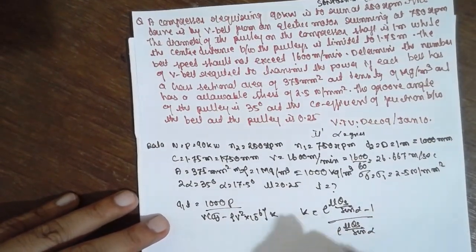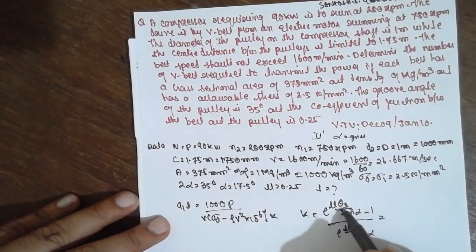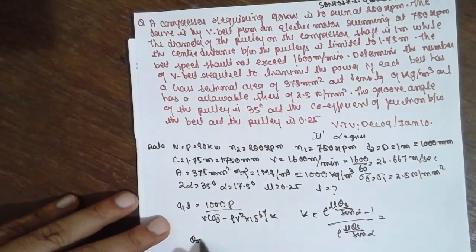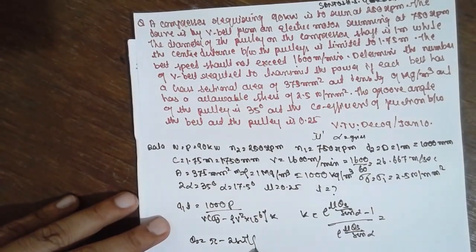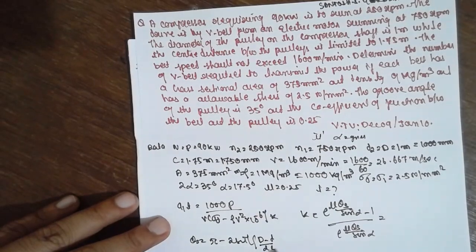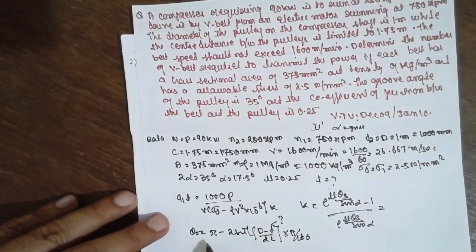Before this you have to find out theta s. What is theta s formula? Theta s is equal to pi minus 2 sine inverse (d by d divided by 2c) times pi by 180. But here one d is missing, this is unknown, you have to find out that one.